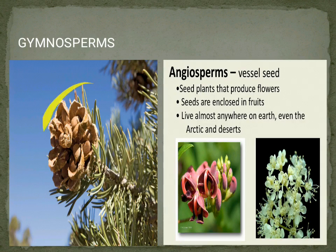Gymnosperms are plant species where seeds are visible on the outside — like Pinus, Genetum, and pine plants whose seeds can be seen with the naked eye. Angiosperms are seed-producing flowering plants whose seeds are enclosed inside fruits — like apples, where the seed is not visible from outside.